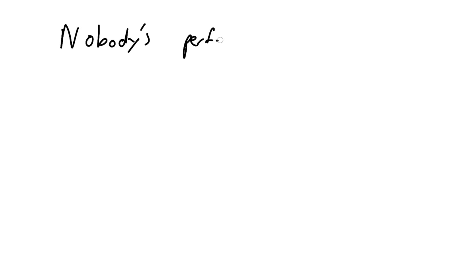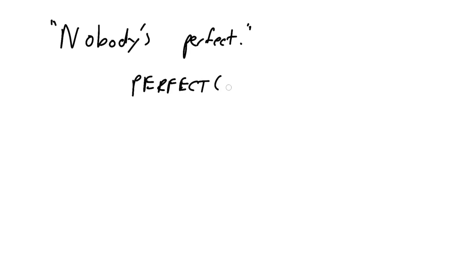Let's begin with an easy one. How about this sentence—a proverb that lots of people have said: "Nobody's perfect." How would we express that in first-order predicate logic? Well, you have to decide what your predicates are. Part of the art of expressing knowledge in a knowledge base is deciding what the predicates are, which is by no means easy. Let's say we have a predicate called "perfect" that takes an X. If we assert that perfect is true for some X, we're saying that person is perfect.